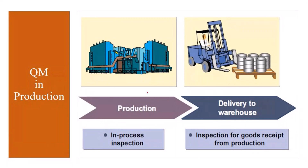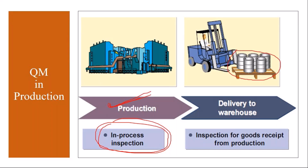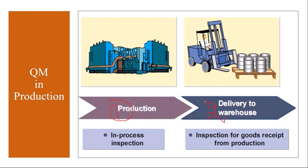The integration between PP and QM happens in two phases. One is during production when the production is ongoing — the quality team will make some quality checks. This is called in-process inspection. The other is after completion of production — you complete production, transfer the manufactured product to the warehouse, then quality inspection is done before selling the product to the market. This is called inspection for goods received from production.